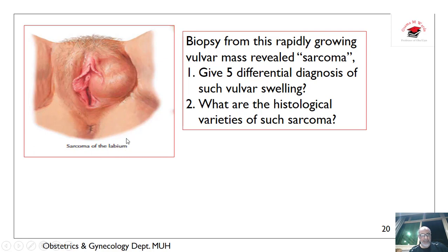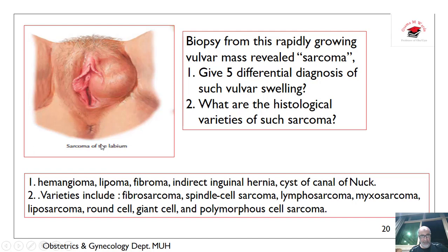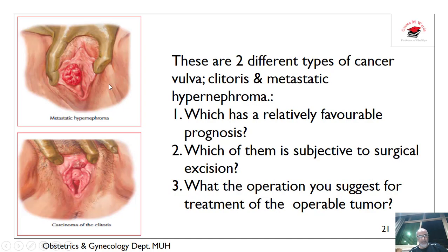What about this lesion? This is a sarcoma of the labia, which is a very rare condition. Differential diagnosis includes any mass of the vulva: Bartholin's mass, lymphoma, fibroma, hemangioma, hidradenitis of the canal of Nuck, and indirect inguinal hernia. Varieties of sarcoma of the labia include fibrosarcoma, spindle cell sarcoma, lymphosarcoma, myxosarcoma, liposarcoma, round cell, giant cell, and polymorphous cell sarcoma.